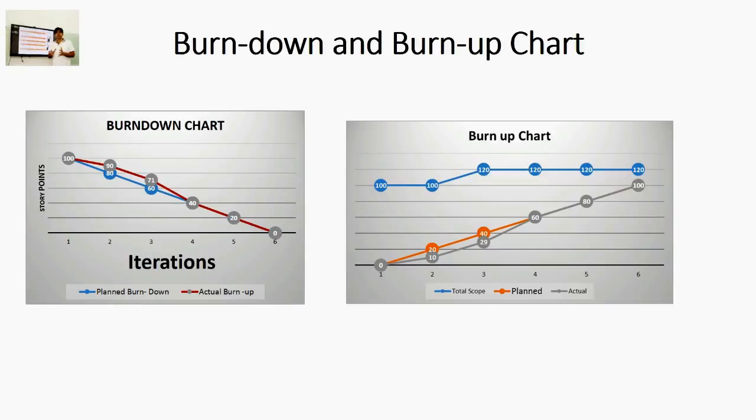This means as more work is completed, a burn down chart will show a progress indicator moving downwards to indicate the reduced amount of work remaining, whereas the progress indicator on a burn up chart will move upward to show the amount of work accomplished.